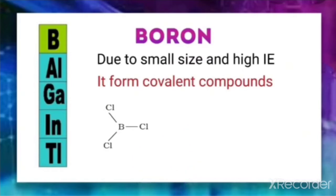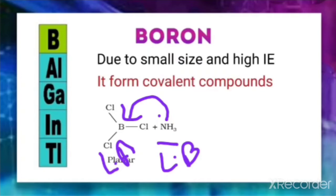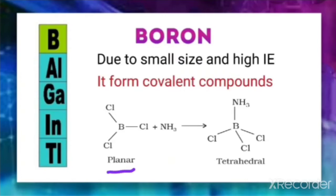BCl₃ easily accepts an electron pair from electron-rich species like ammonia. Ammonia is electron-rich because nitrogen has a lone pair. Ammonia donates its lone pair and BCl₃ accepts it — ammonia acts as a Lewis base and BCl₃ acts as a Lewis acid. This results in bonding between them, converting the trigonal planar BCl₃ into a tetrahedral compound.